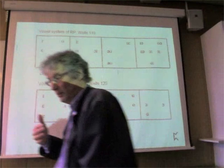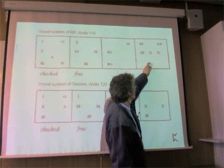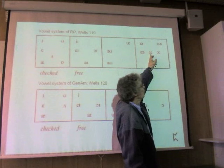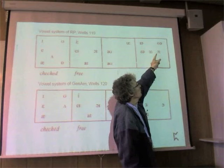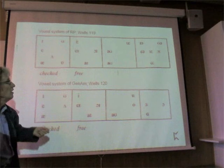All these vowels in RP want an R after them at the end of the word. So: AR in 'car' - 'the car is'; OR in 'nor' - 'law is'; ER in 'stir' - 'stir up'; IR in 'fear' - 'the fear of it'; AIR in 'care' - 'the care of it'; and UR in 'pure' - 'pure American.' With this R always.